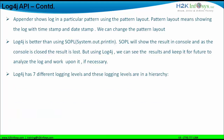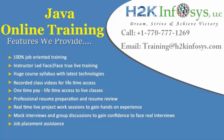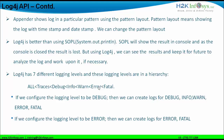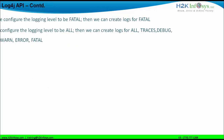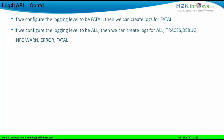Log4j has seven different logging levels arranged in a hierarchy. The highest in the hierarchy is ALL and the lowest is FATAL. If we set the logging level to WARN, we can create logs for WARN, ERROR, and FATAL. If we configure it to DEBUG, we can log DEBUG, INFO, WARN, ERROR, and FATAL. If set to ALL, we can log ALL, TRACE, DEBUG, INFO, WARN, ERROR, and FATAL. If configured to FATAL, we can create logs for FATAL only.